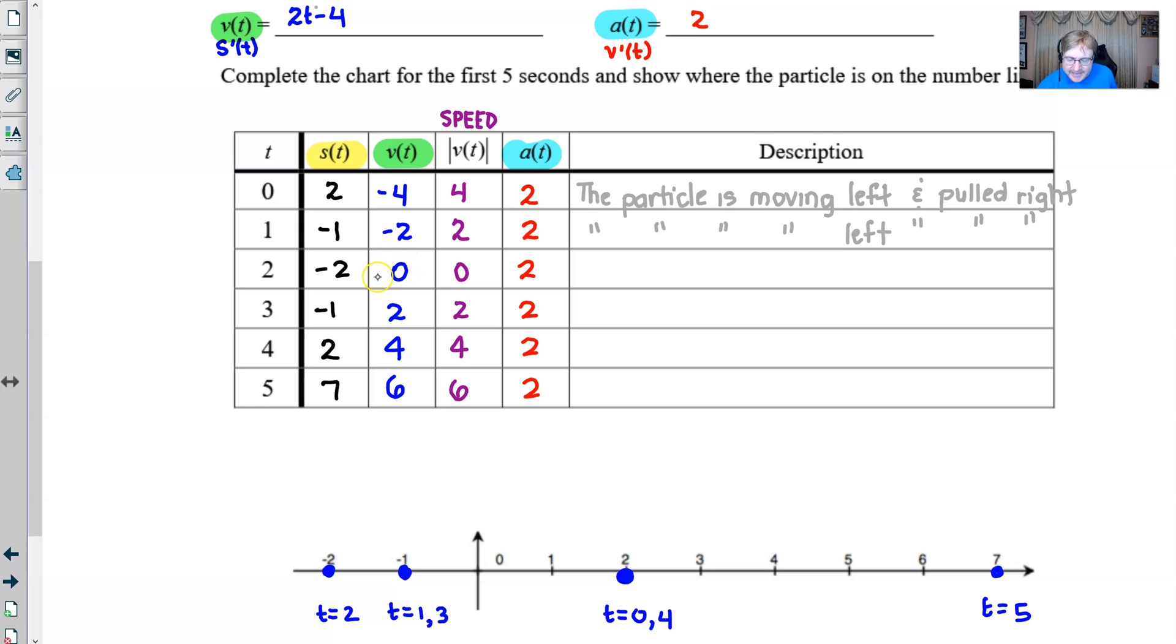Because when we get here to the time 2 and the velocity is 0, well, we only know one thing about that instance. And that is the particle is stopped. Maybe this particle has some acceleration. Maybe it's wanting to do something. But the fact that the velocity is 0 means that it is not going to be moving. So we really don't worry about what the value of the acceleration is at this point.